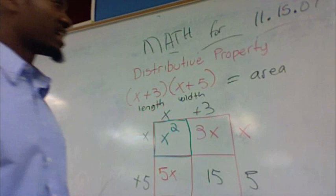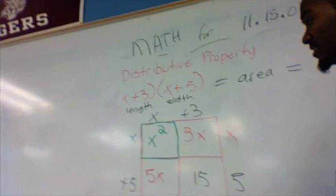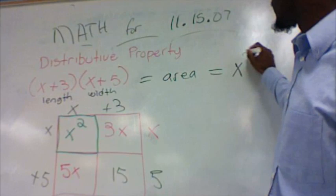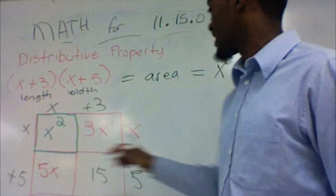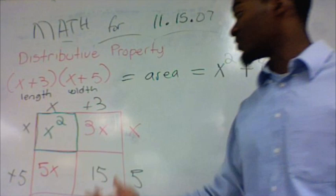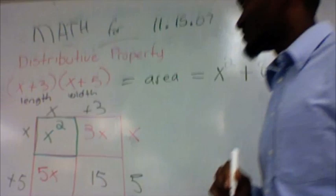The first section is just x squared. And x squared, you have no other like terms, so x squared is just x squared. Now these two sections, because we have like terms, you can add the 5x and the 3x, and that gives you 8x. And the 15 is a constant, it's a number, it's the only number in this entire region here, so that's just 15.